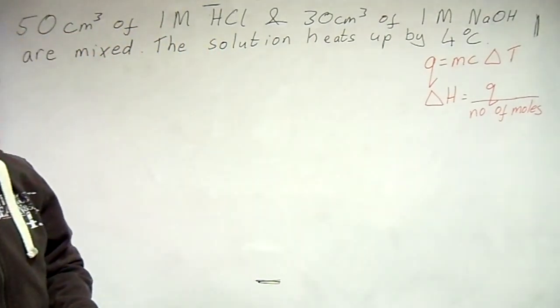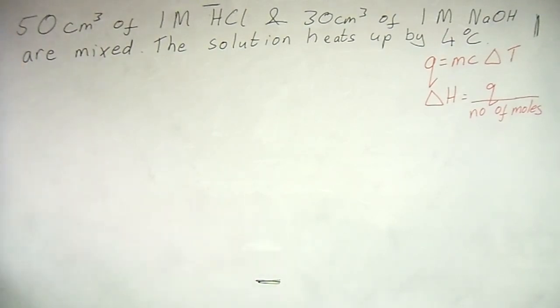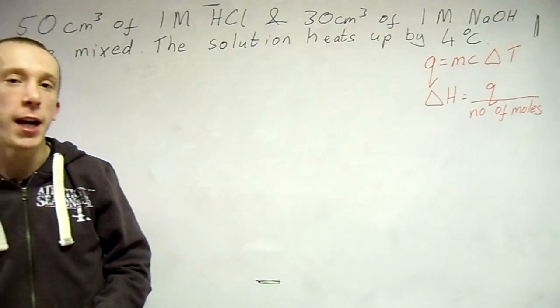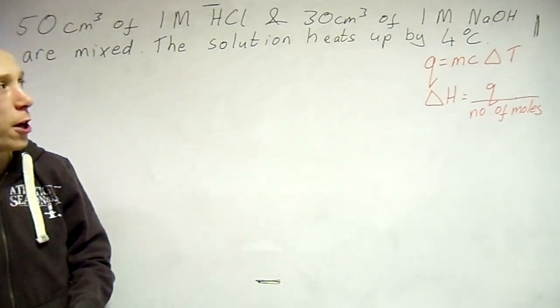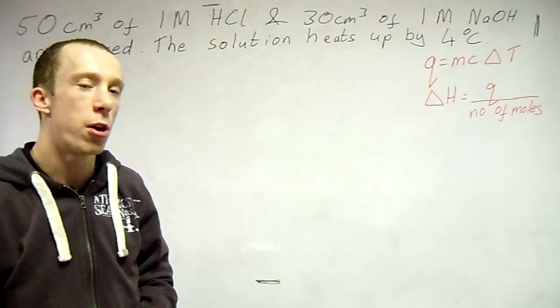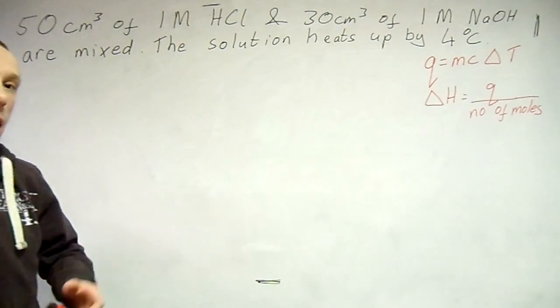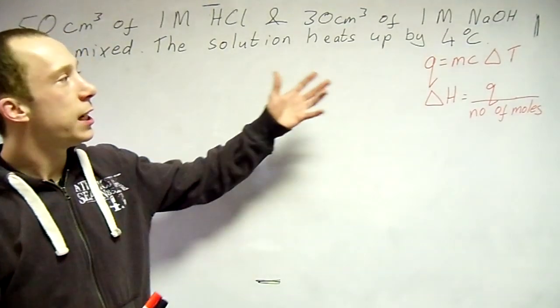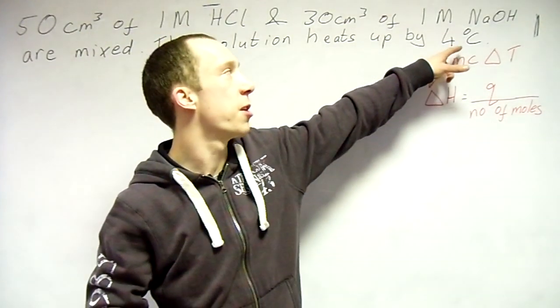If you notice the question on the board, I'll step out of the way. So 50 cubic centimeters of hydrochloric acid and 30 cubic centimeters of sodium hydroxide are mixed together, so they would start to neutralize each other. Now in doing this, they heat up the solution by 4 degrees Celsius.